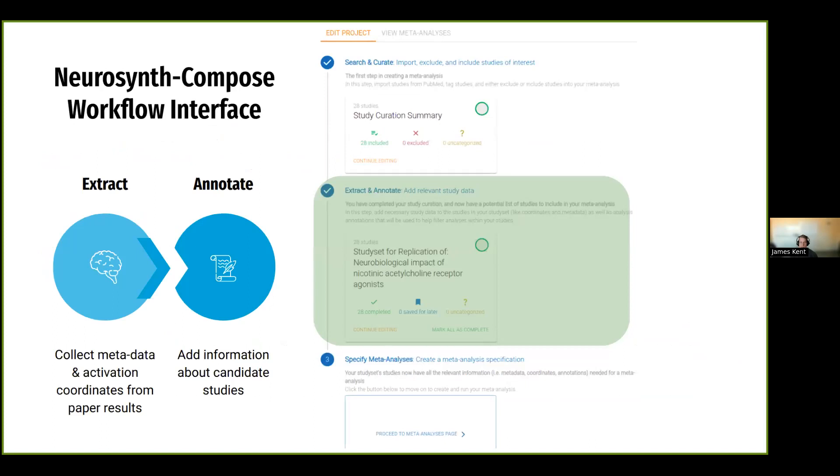Okay, so now we'll move on to the next step for extraction and annotation. Once we have gone through that process of eligibility and curation or searching and curation from the previous step. So now we have our study set and we have some of the coordinates that were extracted automatically by Neurosynth Compose, but we may also need to import some coordinates manually, as well as label the particular analyses with their appropriate labels on whether to include them, as well as whether or not they are activations or deactivations,